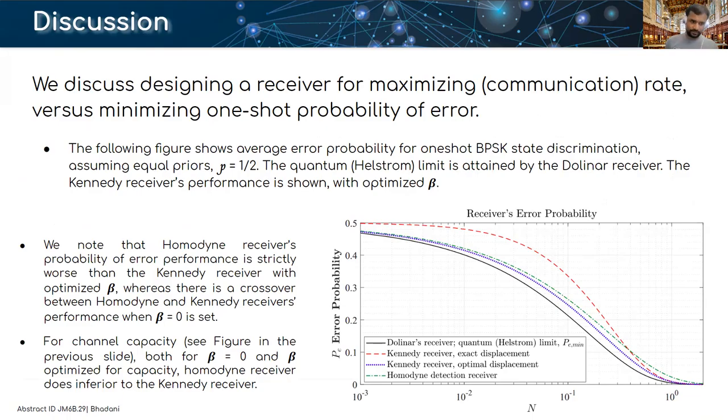We note that the homodyne receiver's probability of error performance is strictly worse than the Kennedy receiver with optimized displacement, whereas there is a crossover between homodyne and Kennedy receivers when beta is zero.